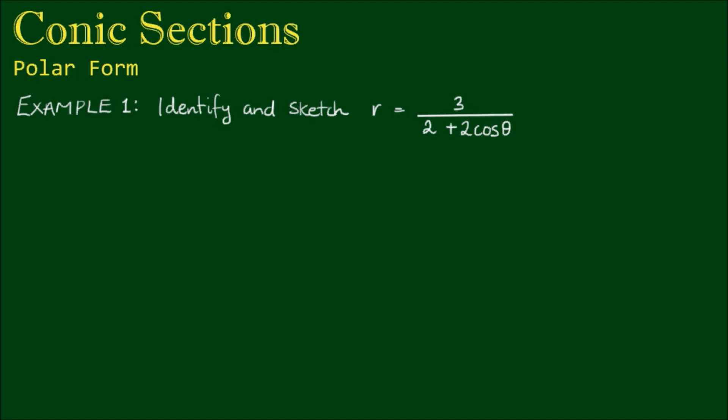Now the very first thing we need to do is to manipulate this equation a little bit so that it has the form R equals L divided by 1 plus E cos theta. As it is, it's very similar to the form that we want, but we have a 2 here instead of a 1.